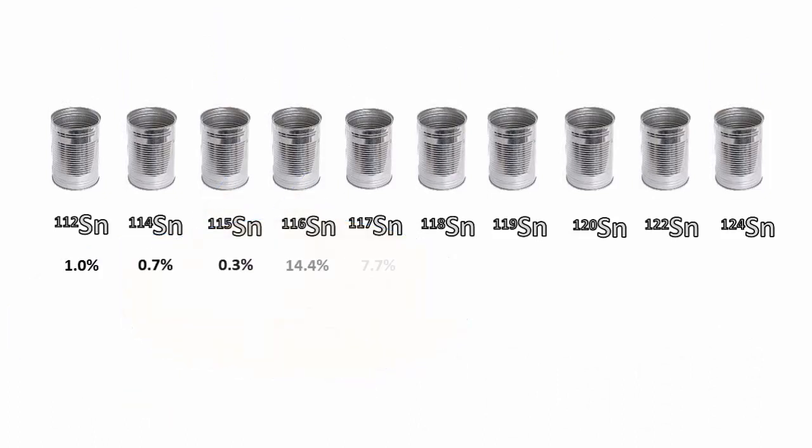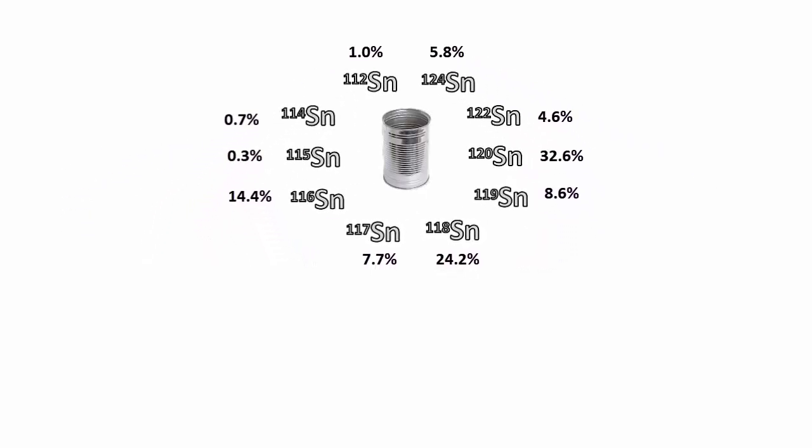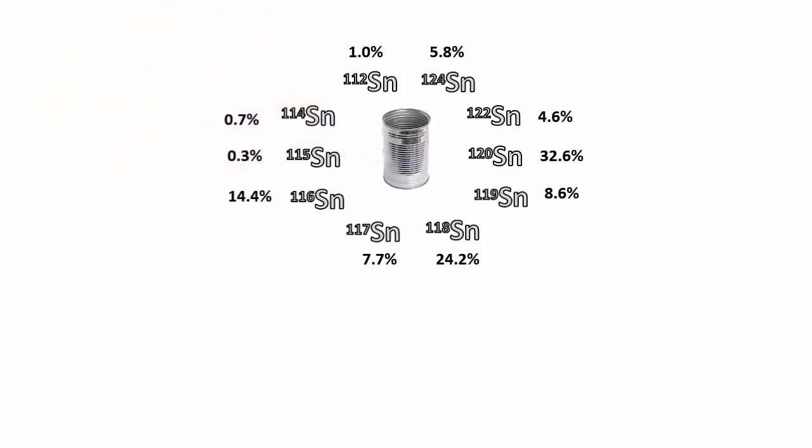In nature, tin's 10 stable isotopes are all mixed together. So it's more realistic to show one tin can made from all the isotopes. Separating isotopes is difficult because they're so alike.